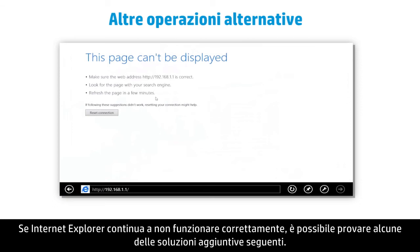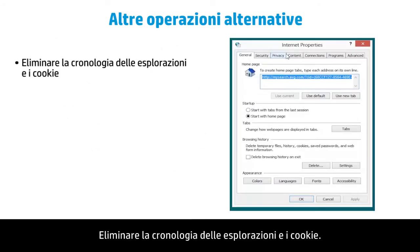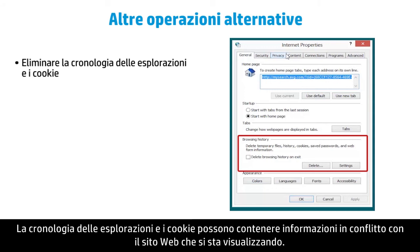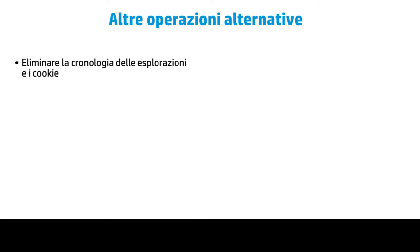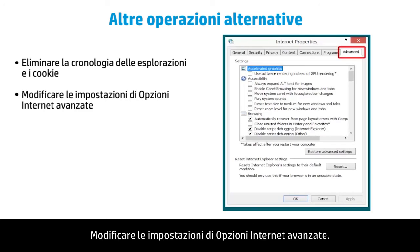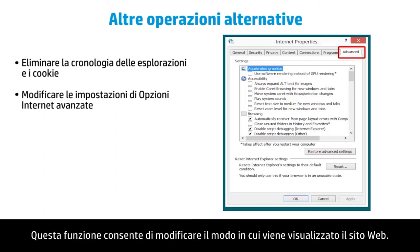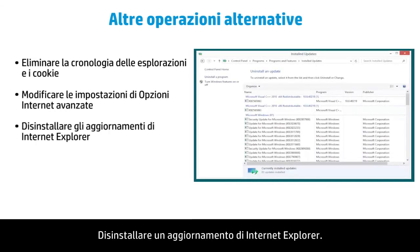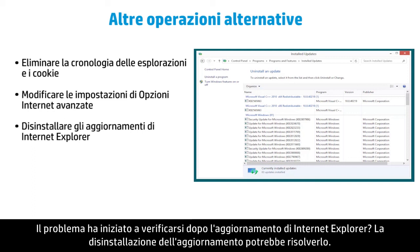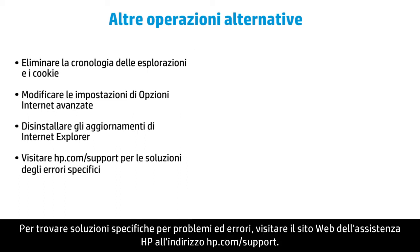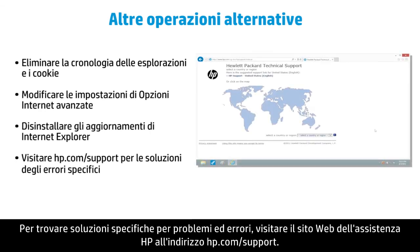If Internet Explorer is still not working properly, you might try some of these additional solutions. Try deleting your browsing history and cookies, as they may contain information that conflicts with the website you are viewing. Try changing Advanced Internet Options, which allows you to change the way websites are displayed. Try uninstalling an Internet Explorer update if the problem began after an update, as uninstalling it may solve the problem. To find solutions for specific problems and errors, check the HP Support website at hp.com/support.